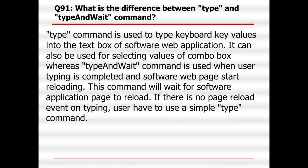What is the difference between 'type' and 'typeAndWait' commands? The 'type' command is used to type keyboard key values into a text box of a software web application, and it can also be used for selecting a value from a combo box. The 'typeAndWait' command is used when the user's typing is completed and the software web page starts reloading — this command will wait for the page to reload fully. If there is no page reload event on typing, we should use 'type' instead of 'typeAndWait'.